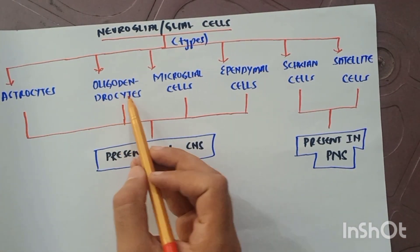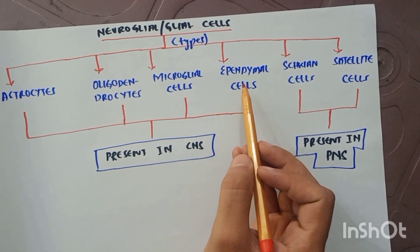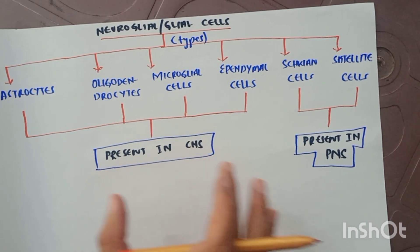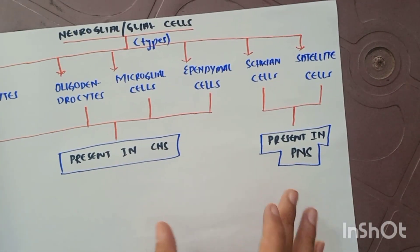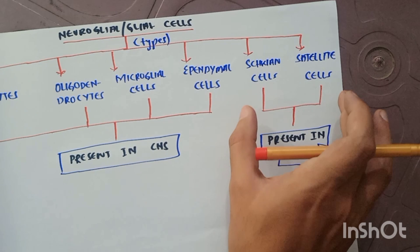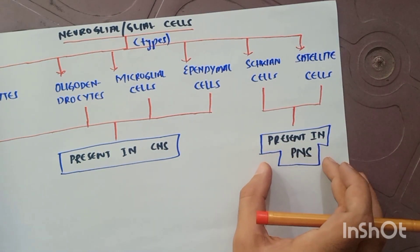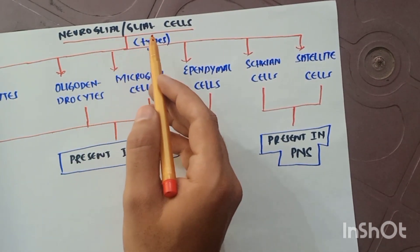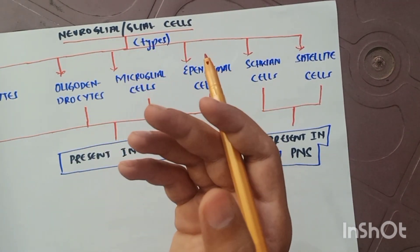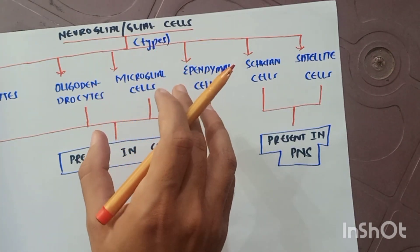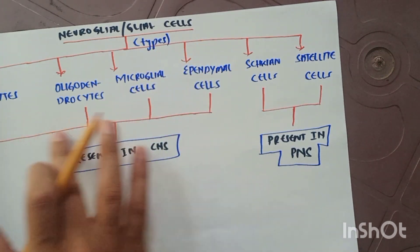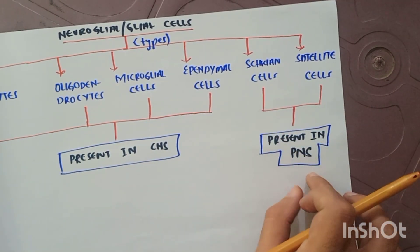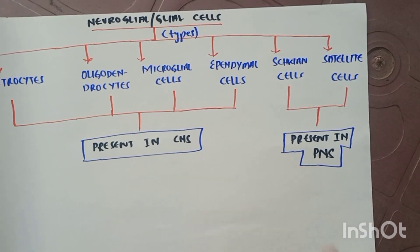The astrocytes, oligodendrocytes, microglial cells, and ependymal cells — these four types are present in the central nervous system. The Schwann cells and satellite cells are present in the peripheral nervous system. So the glial cells consist of six types: the first four in the CNS and the last two only in the peripheral nervous system.